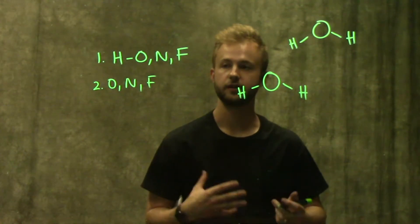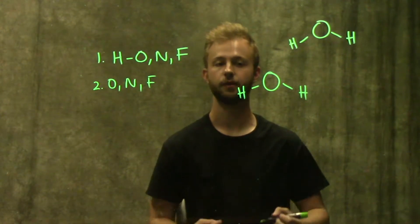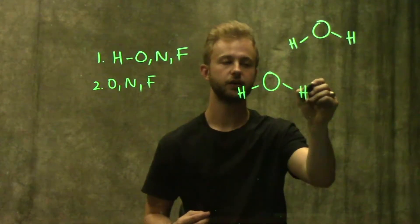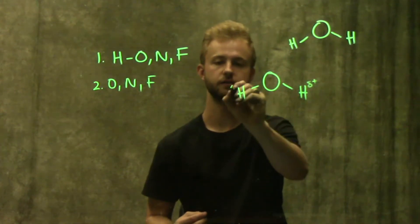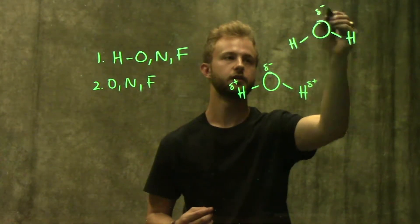Like I talked about in the video on covalent bonds, the covalent bonds in a water molecule are polar covalent bonds. So we know that our hydrogen molecules are partially positive and our oxygen atoms are partially negative.